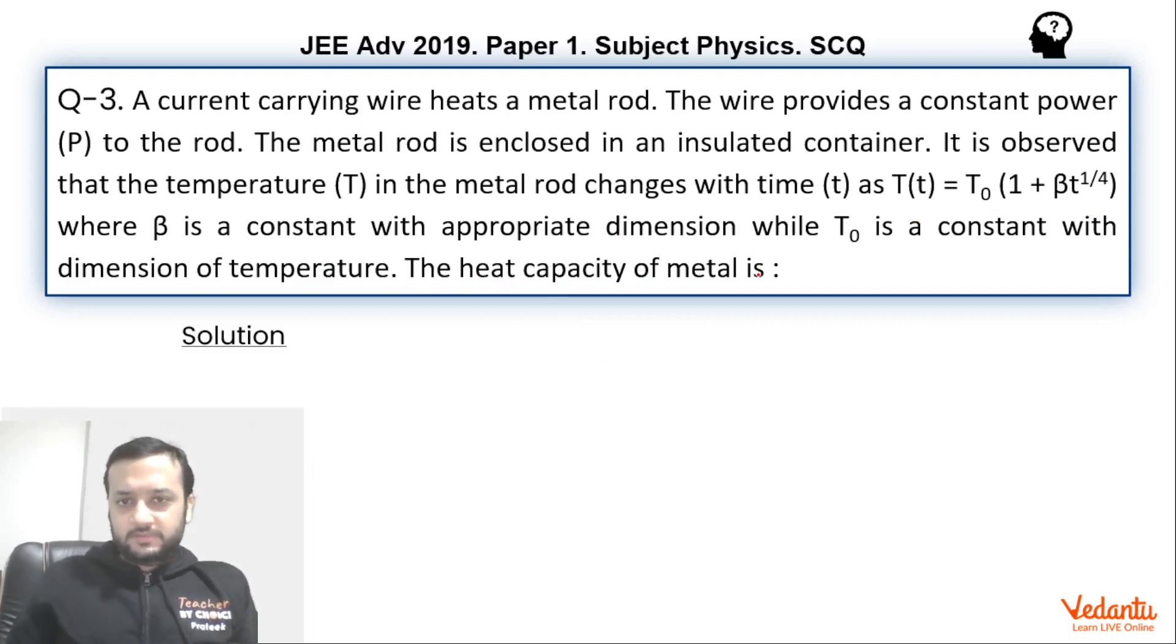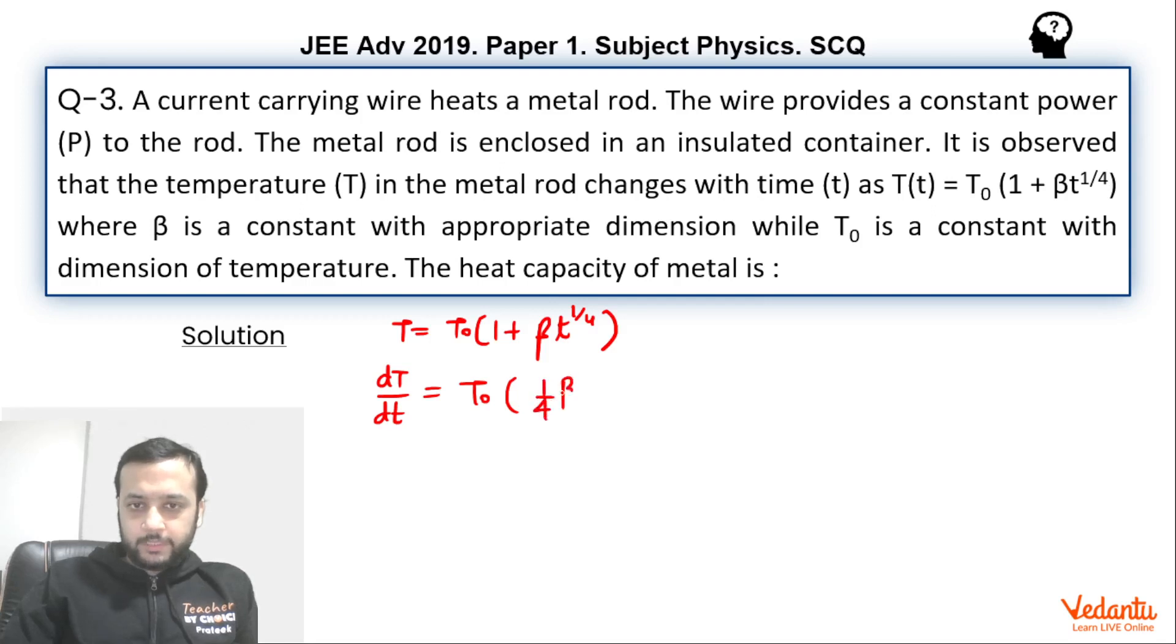So as you can see, if you see this function which is being given over here, temperature is given as T₀ into 1 plus beta to the power beta into T to the power 1 by 4. If you find the rate of change of temperature, so this will be simply T₀ into this will become 1 by 4 into beta into T to the power minus 3 by 4.